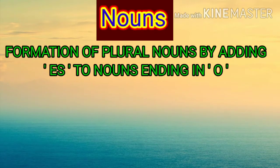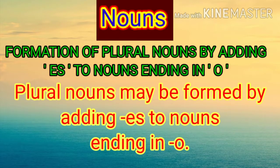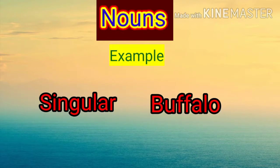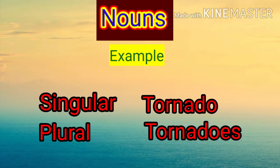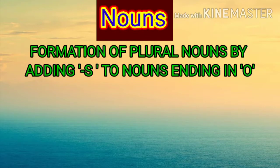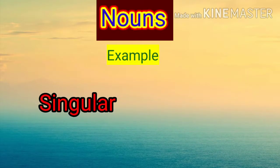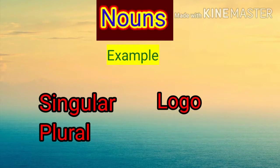Next heading: formation of plural nouns by adding -es to nouns ending in o. Plural nouns may be formed by adding -es to nouns ending in o. For example: buffalo — buffaloes; tomato — tomatoes; tornado — tornadoes. Formation of plural nouns by adding -s to nouns ending in o: photo — photos; logo — logos; piano — pianos.